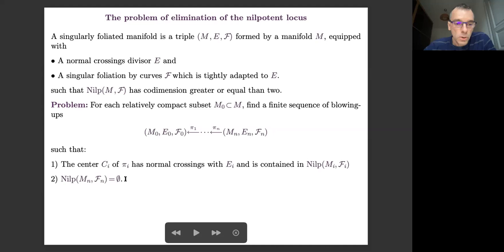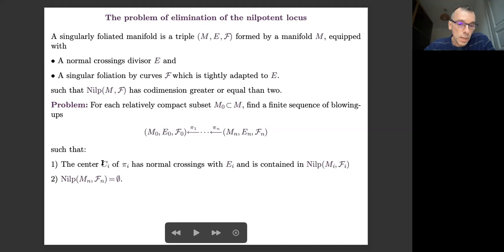As I recall, we try to find, for each compact set, a sequence of blow-ups such that the nilpotent locus at the end is empty. Moreover, we would not like to modify the foliation outside the nilpotent locus. I'm insisting on this point because you're going to see in a moment that it's a quite delicate point.